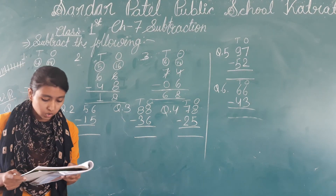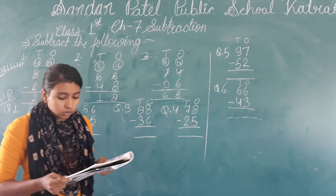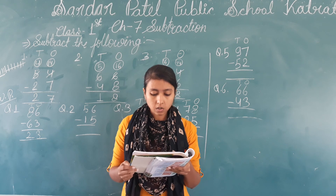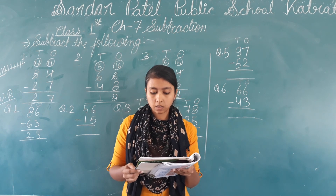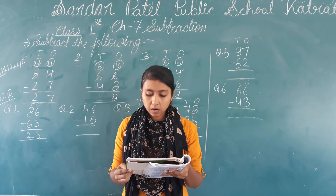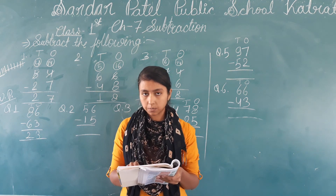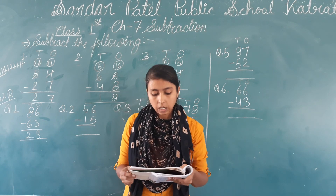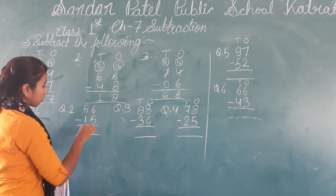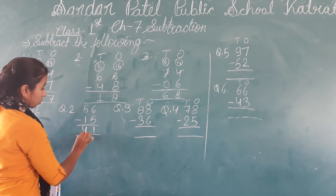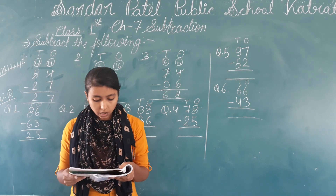6 minus 3 is 3, and 8 minus 6 is 2, so 23 toffees are left. The second question: the school bus had 56 seats. When students boarded the bus, 15 seats were left. How many seats were taken?